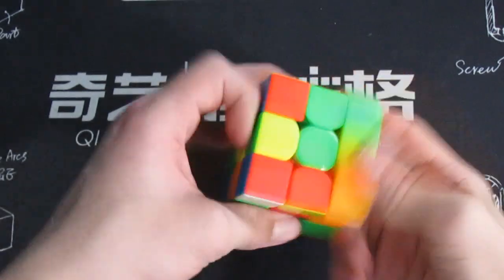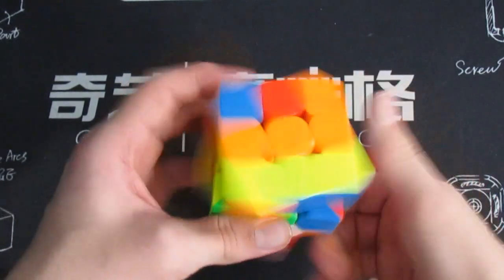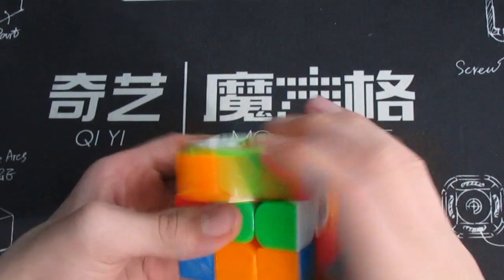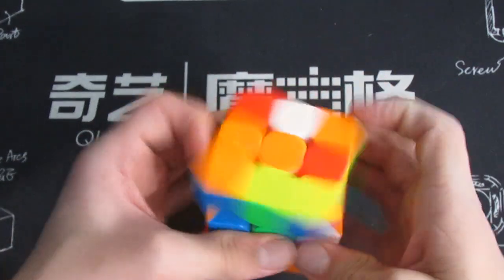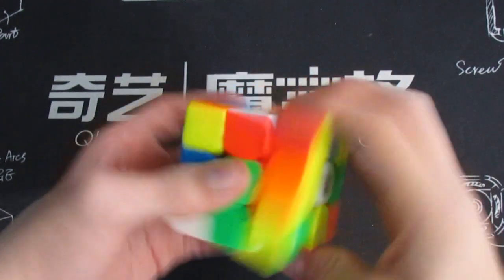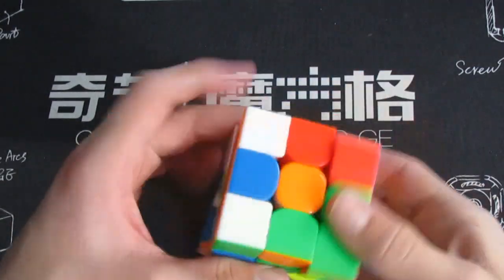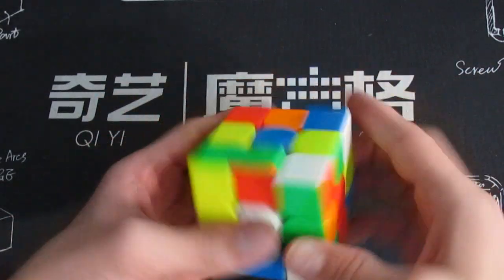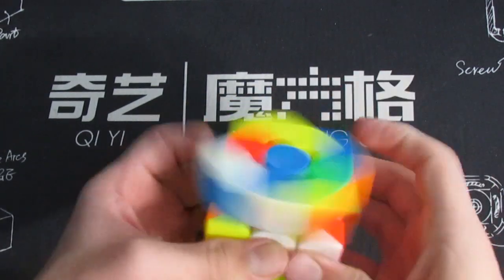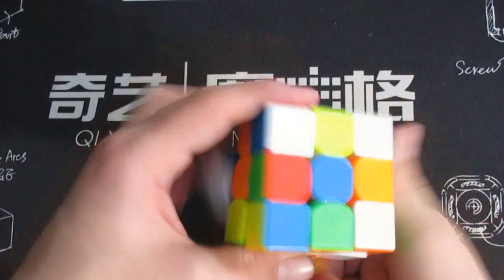Okay, so first impressions are that the cube is a little slower, but that makes it more controllable. It feels a lot more gummy, I guess you could say. And it's not locking up as much. And it just feels more fluent, I guess, which is a good thing. So yeah, I'd say this is a pretty good lube.